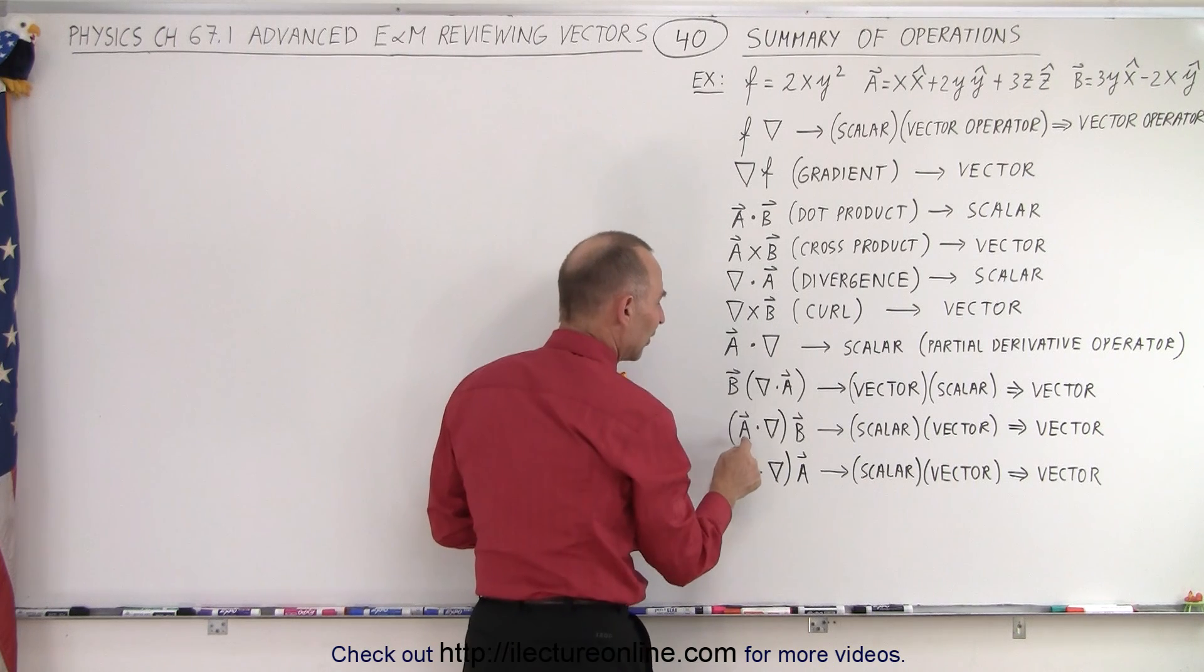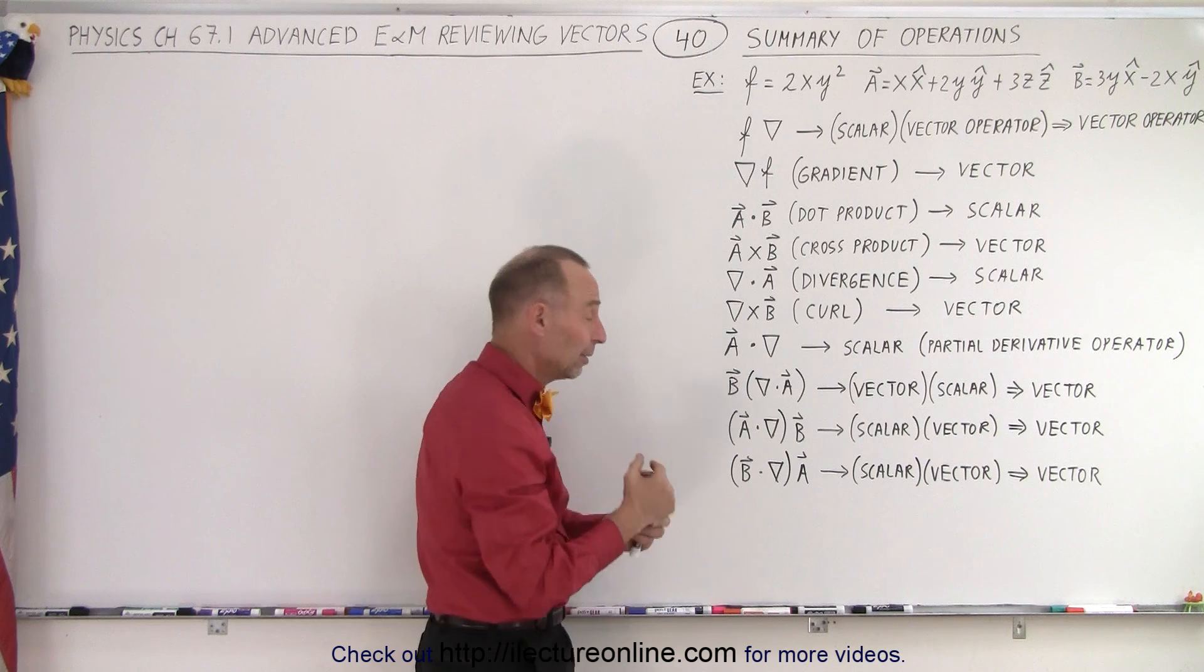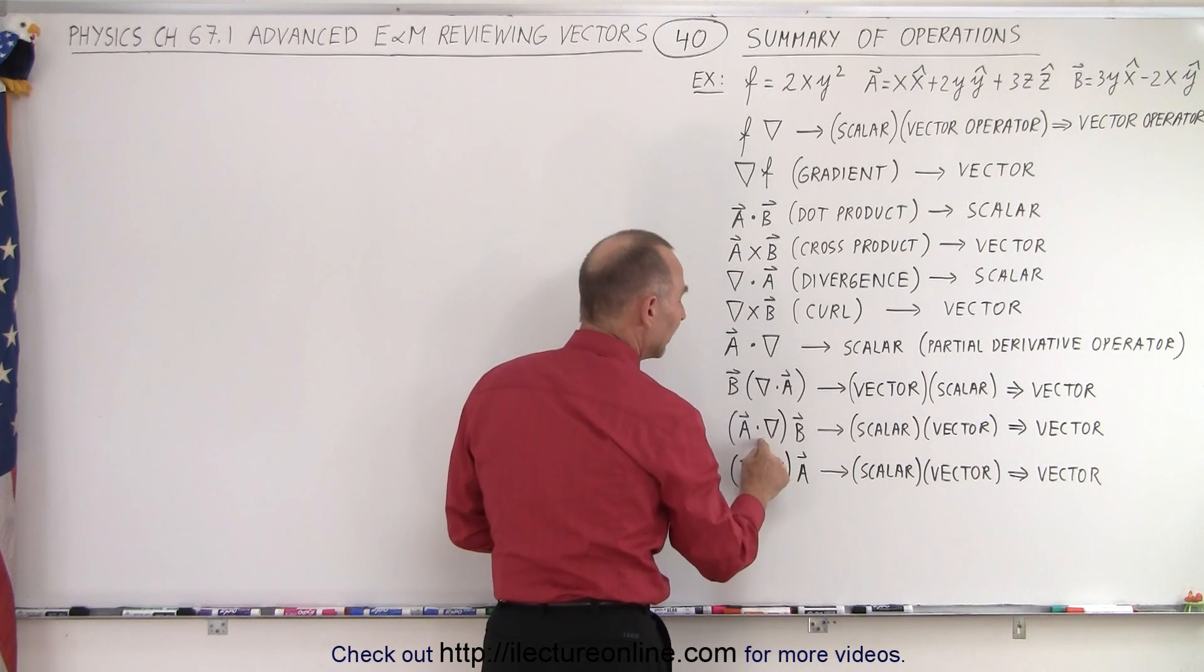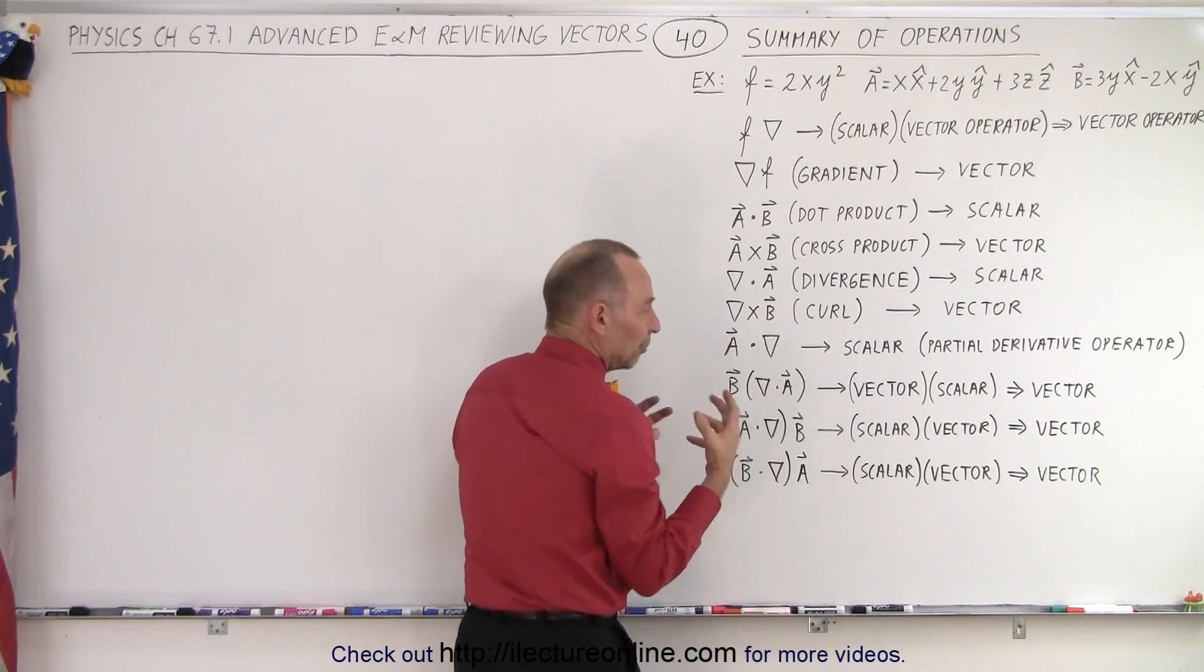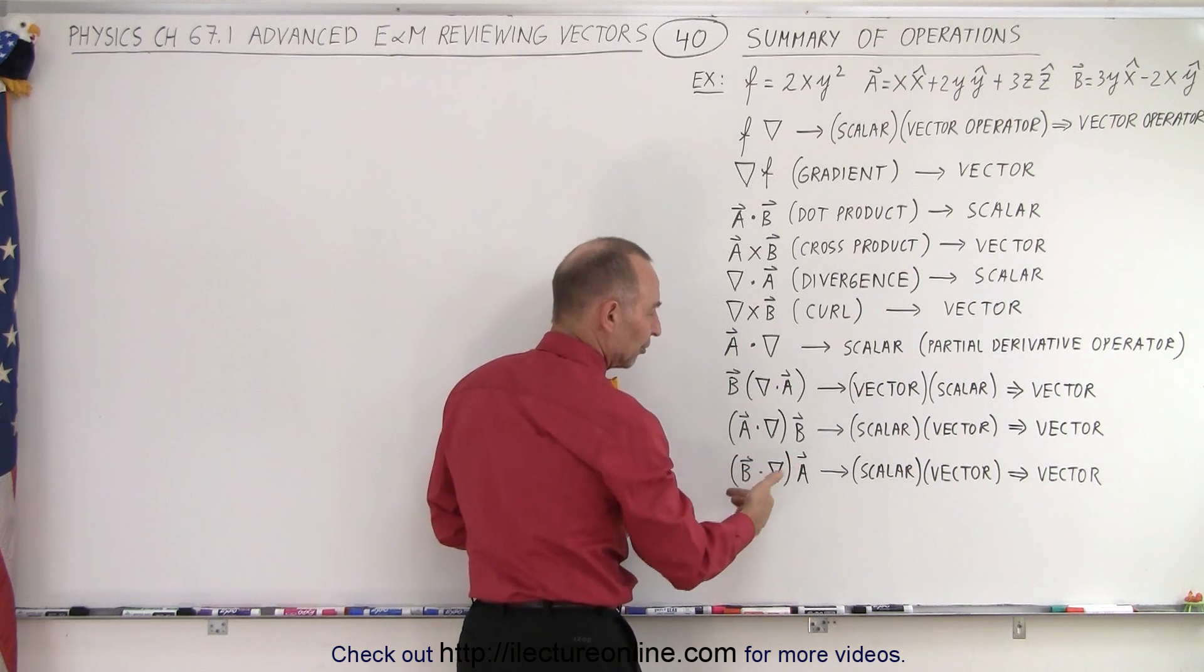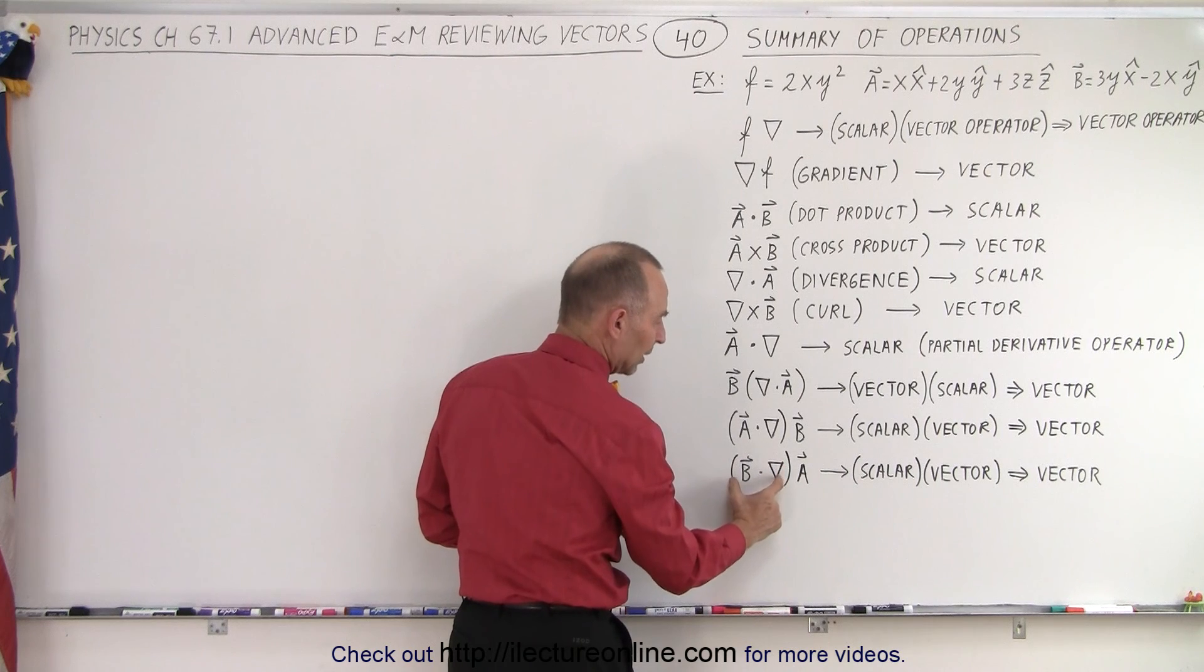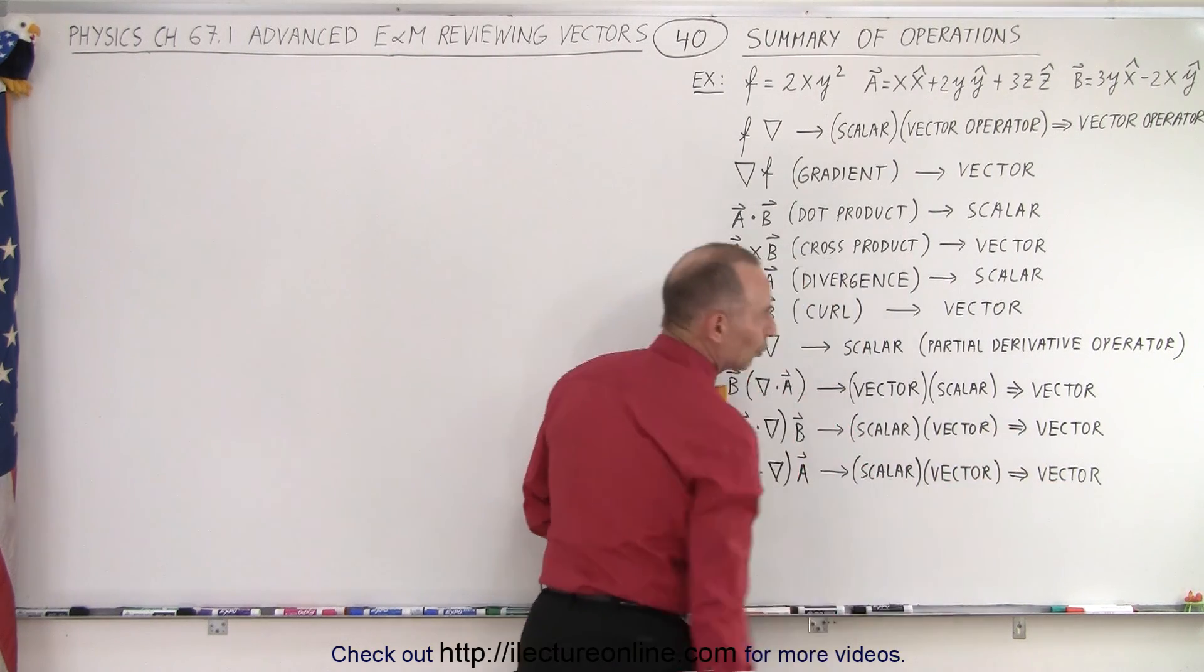Here we have the vector a multiplied times the del operator. We saw some examples of that in the previous couple of videos. When we did that, we end up with a scalar quantity. Then when you multiply a scalar times a vector, you end up with a vector quantity. It's simply a vector multiplied by the scalar. And here we can reverse the order. We can have b dot the del operator. Again, this gives us a scalar quantity, multiplied times a vector ends up in a vector quantity.